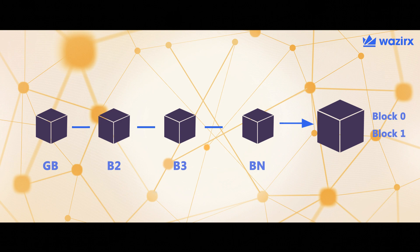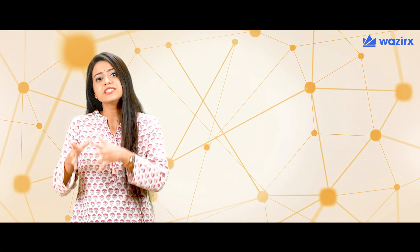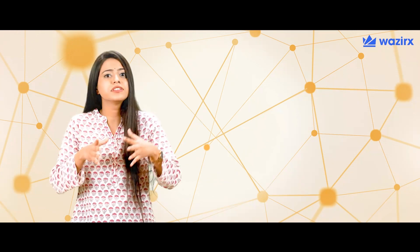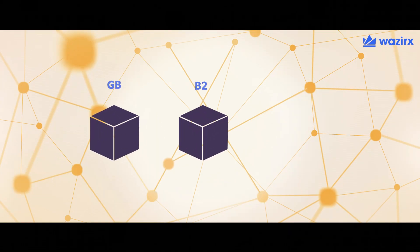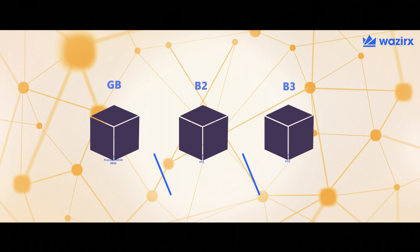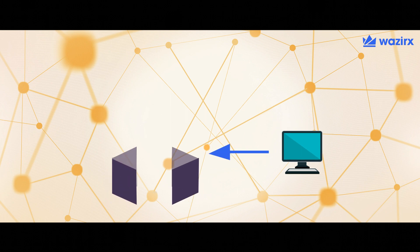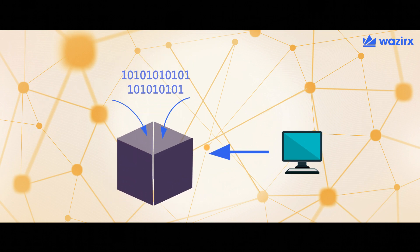The genesis block is occasionally referred to as block zero or block one. When a block is broadcasted to a blockchain, it references the previous block. However, in the case of the genesis block, there is no previous block for reference, so genesis blocks are generally hard-coded into the software.